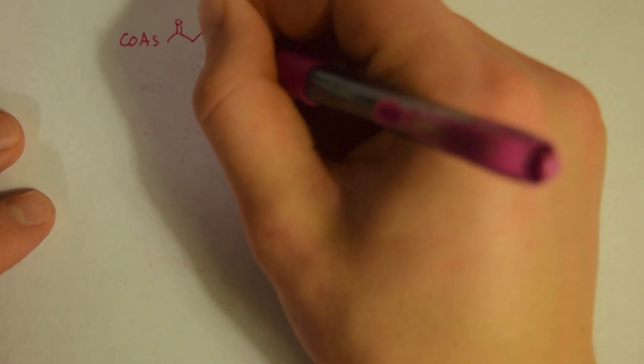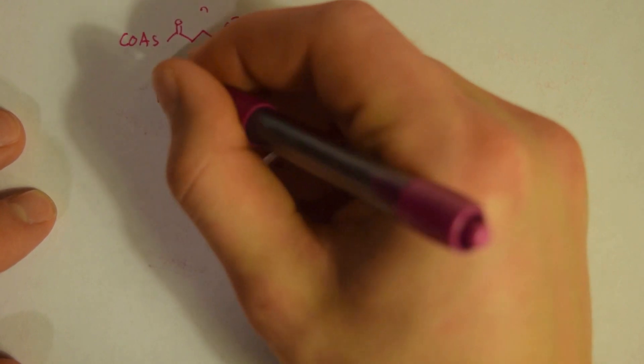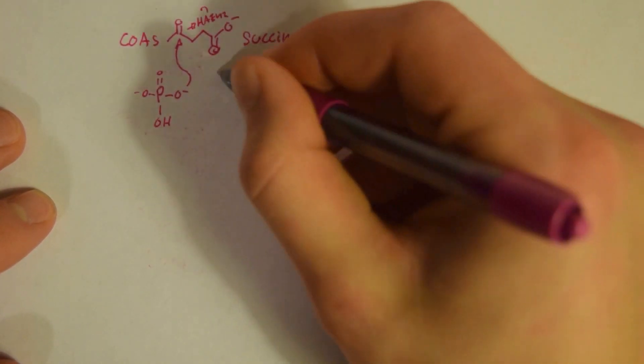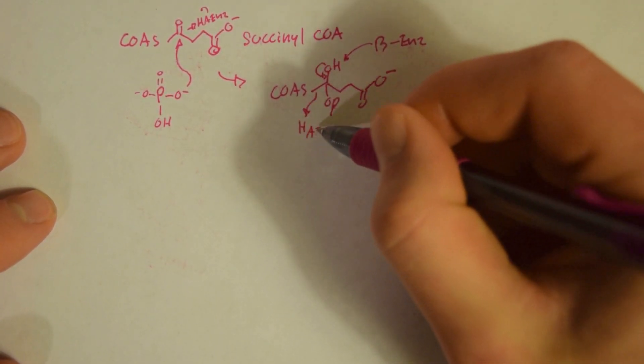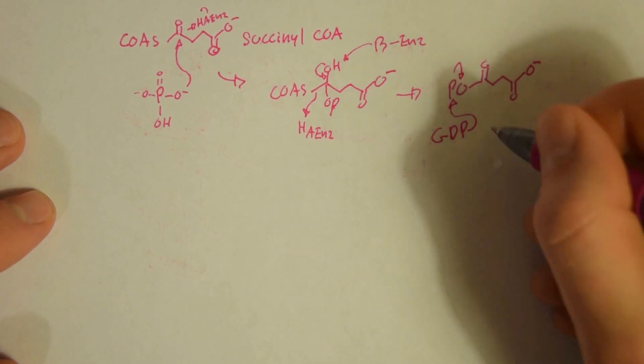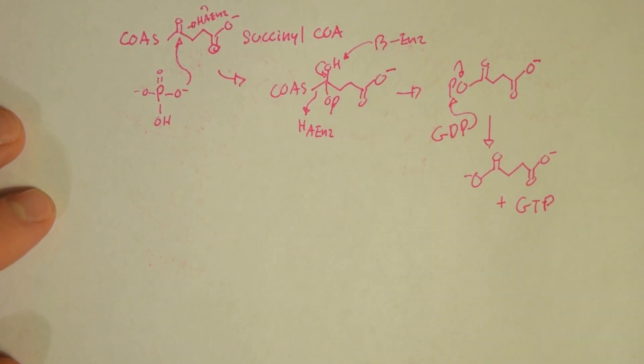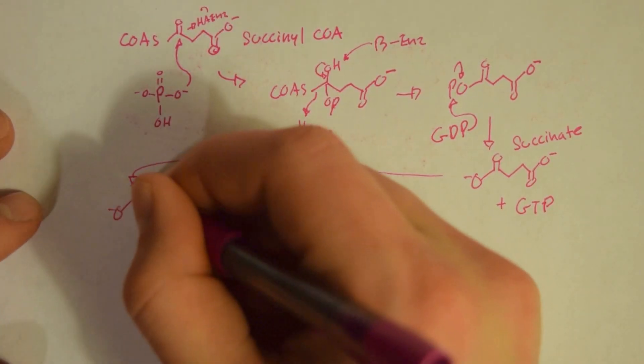The succinyl-CoA is then going to be attacked by a phosphate group, giving us a tetrahedral intermediate. The CoA is then going to be kicked off, giving us CoASH. The phosphate group is then going to be attacked by a GDP, giving us succinate and also GTP.